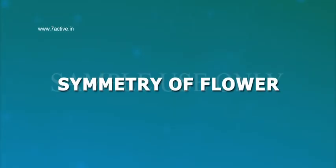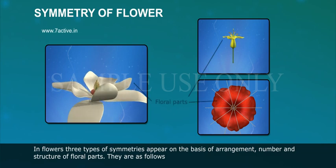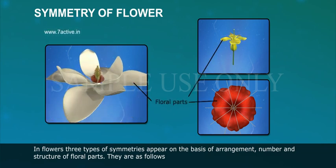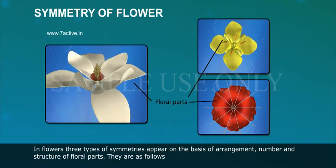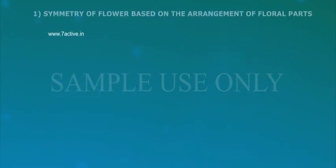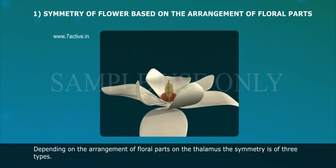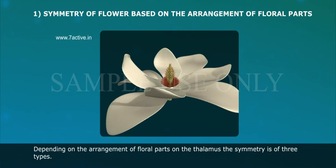Symmetry of flower. In flowers, three types of symmetries appear on the basis of arrangement, number, and structure of floral parts. Depending on the arrangement of floral parts on the thalamus, the symmetry is of three types.